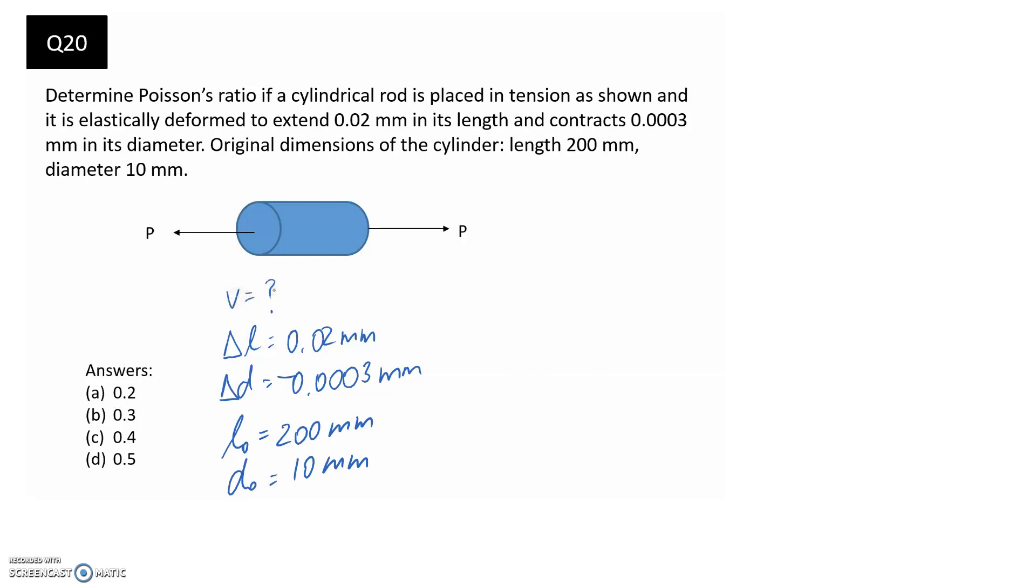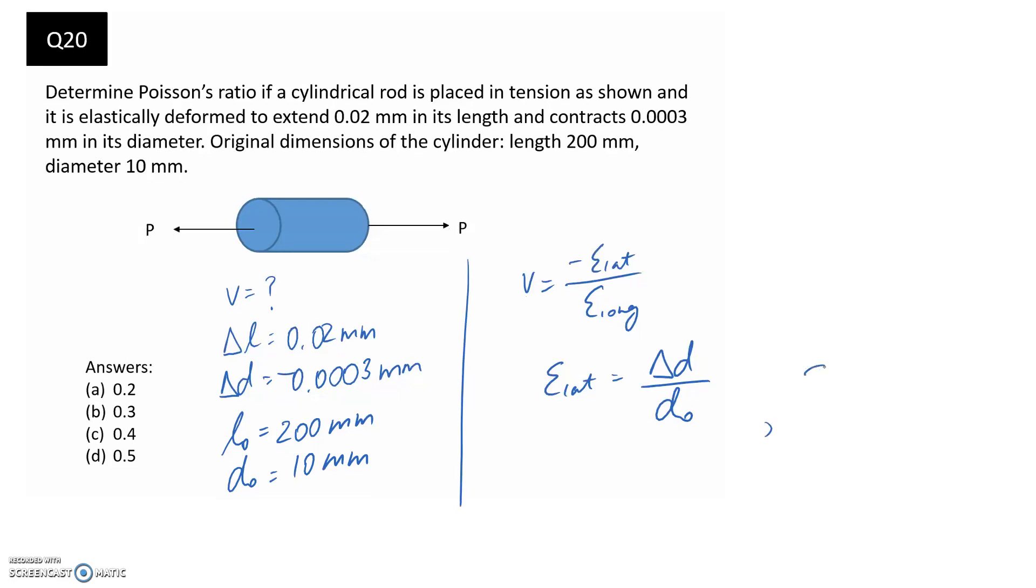What we want to find is Poisson's ratio, and really the only equation that involves Poisson's ratio is this one here, which relates together the lateral strain and the longitudinal strain. So to be able to calculate Poisson's ratio, we need to first find both of these. Lateral strain we can get from the change in diameter divided by the original diameter. And similarly, the longitudinal one is from the change in length over the original length. Let's go through first and find both of these, since that's what we're given in the information in the question.